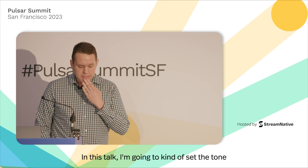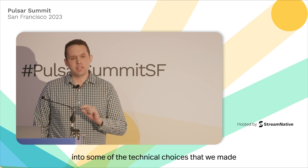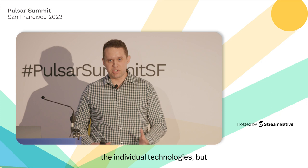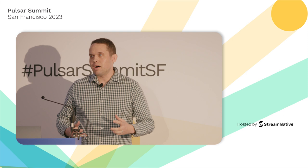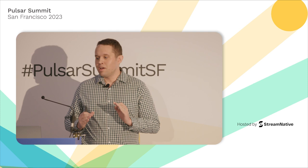In this talk, I'm going to set the tone for machine learning and why it has a little bit of different requirements than what you have in other event-driven applications. Then I'll deep dive into some of the technical choices we made when building this system. The essence of this talk is about how the maturity of these technologies and the connections between them means that what now exists can be used to build something really powerful, purely based on open source technologies, even with a very small set of engineers.